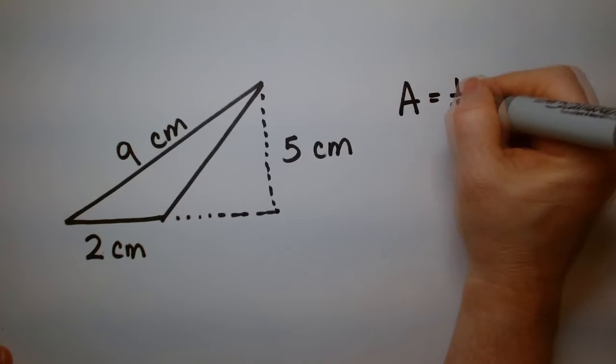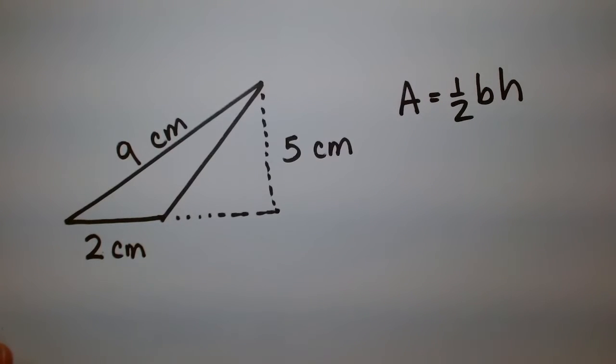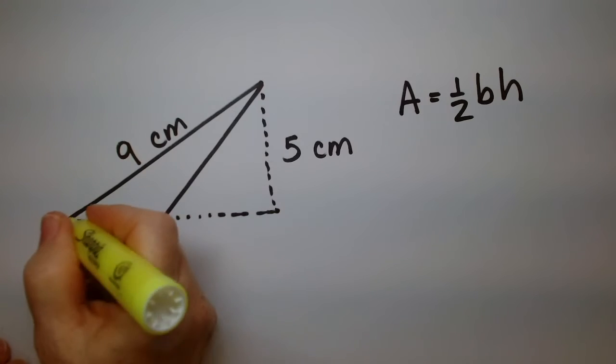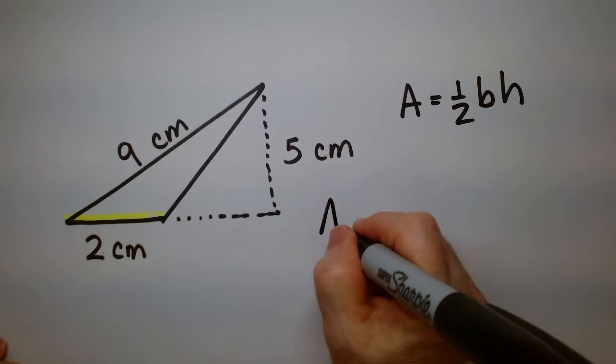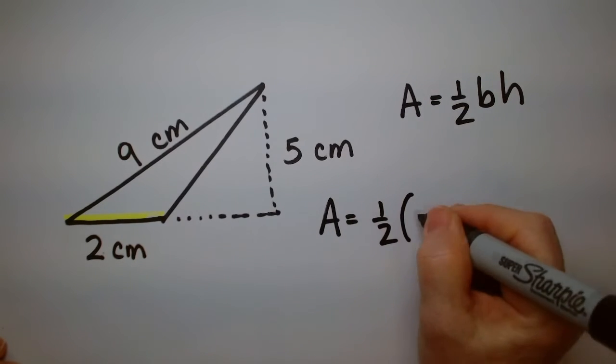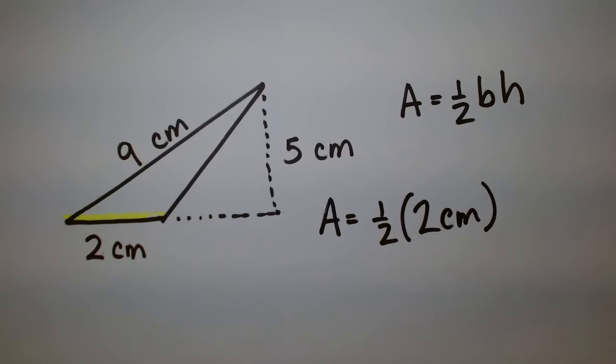Area is one half the base times the height. How much is the base? Now you might be tempted to say it's from here to here, but it's not. It's just the base of the triangle. So we're just looking for this number here. And for us, that's going to be 2 centimeters. So the area is one half times 2 centimeters, the height.